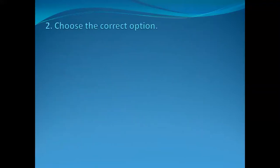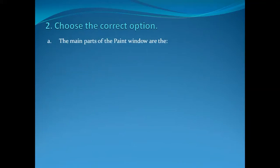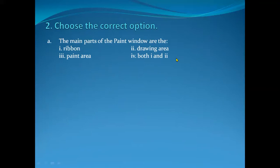Okay, now we are going to read question number two: Choose the correct options. This is on the same page, page number 52. Number A: The main parts of the Paint window are: (1) Ribbon, (2) Drawing Area, (3) Paint Area, and (4) Both one and two. We are going to just read it.